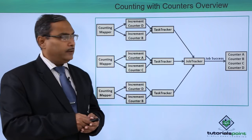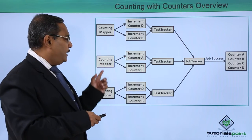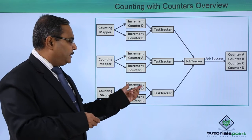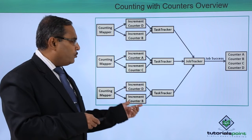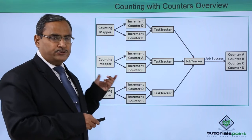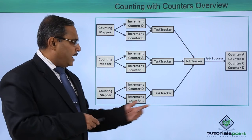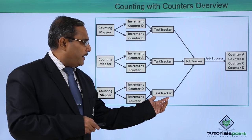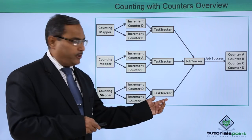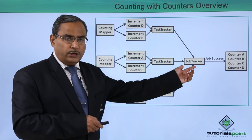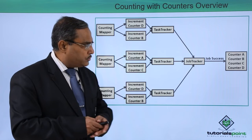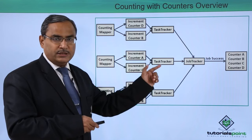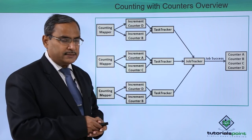Here is the diagram. We have the counting mapper tasks, which produce increment counter D and increment counter B as outputs, making them available to the task tracker. From the task tracker it goes to the job tracker, which produces the final outputs — counted A, B, C, D — and the job completes successfully.